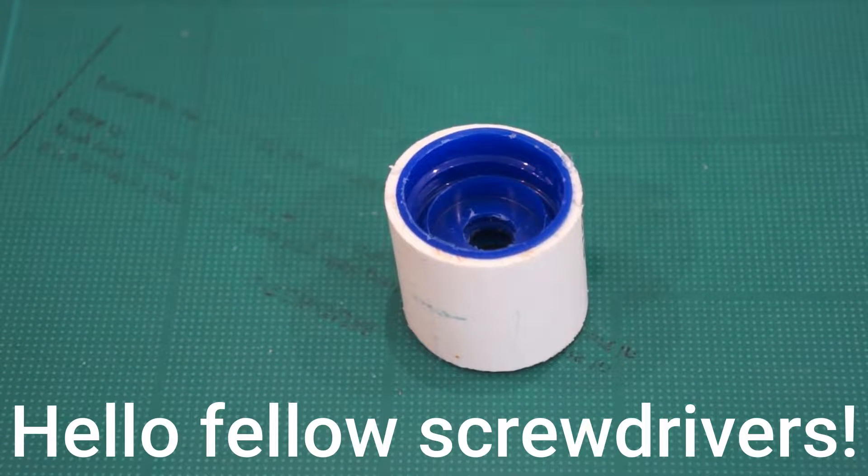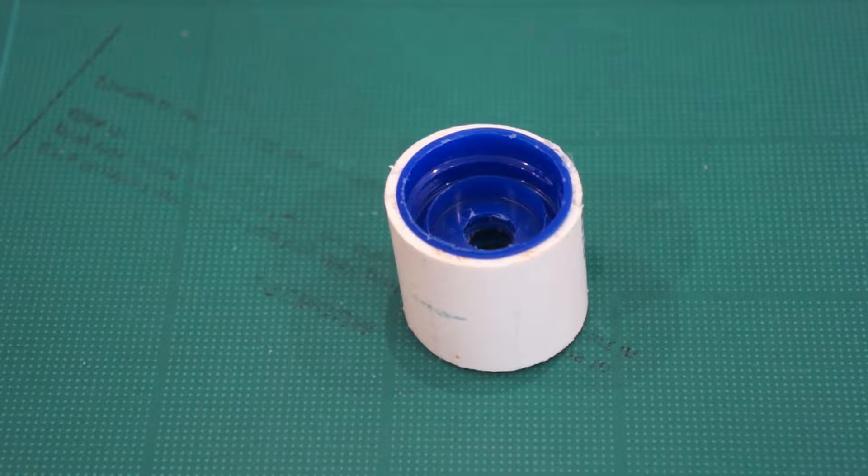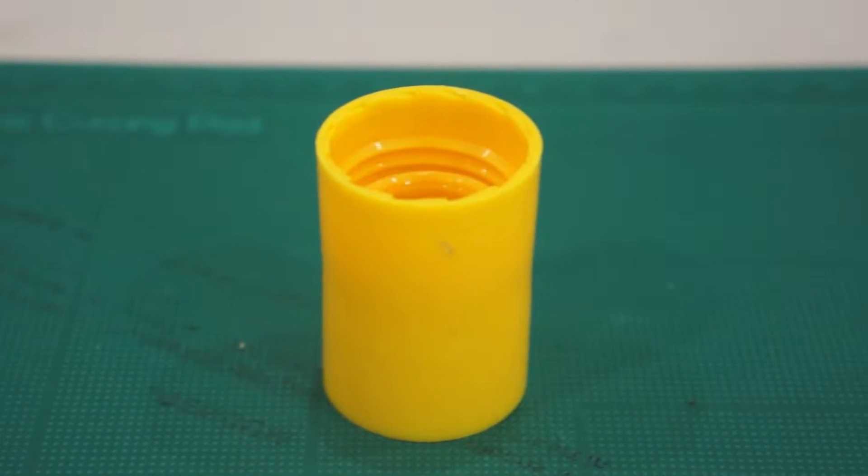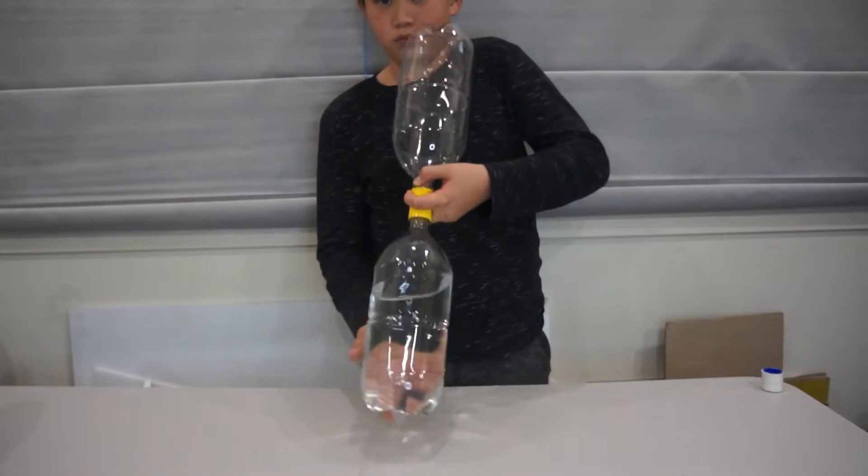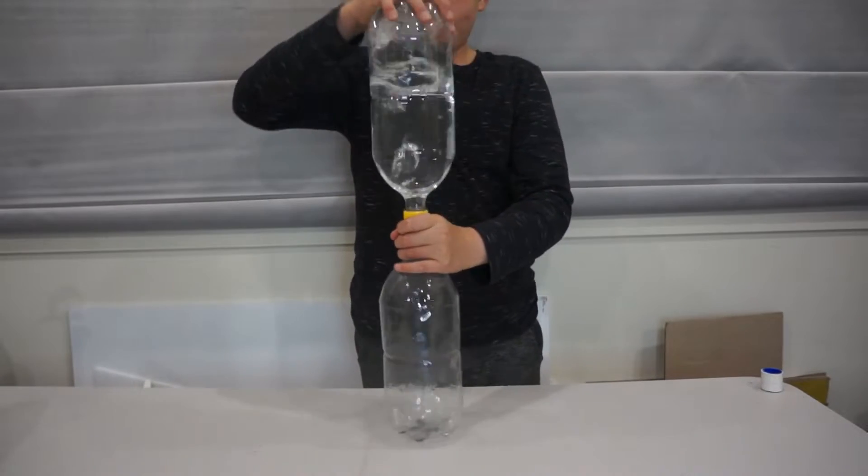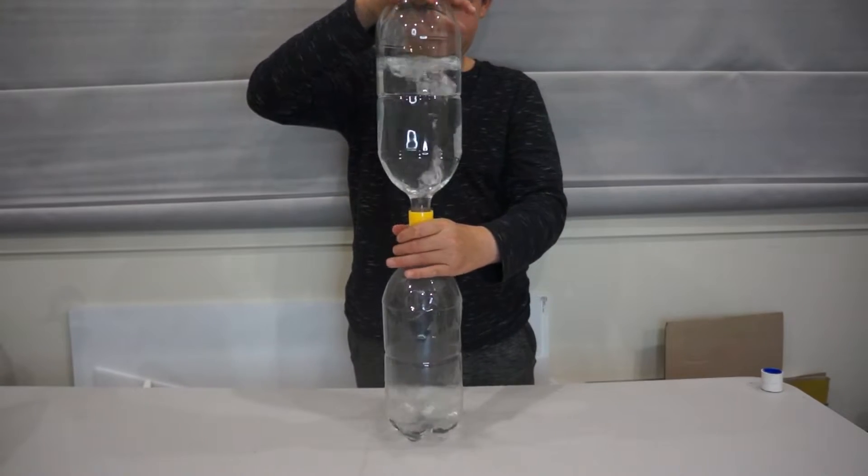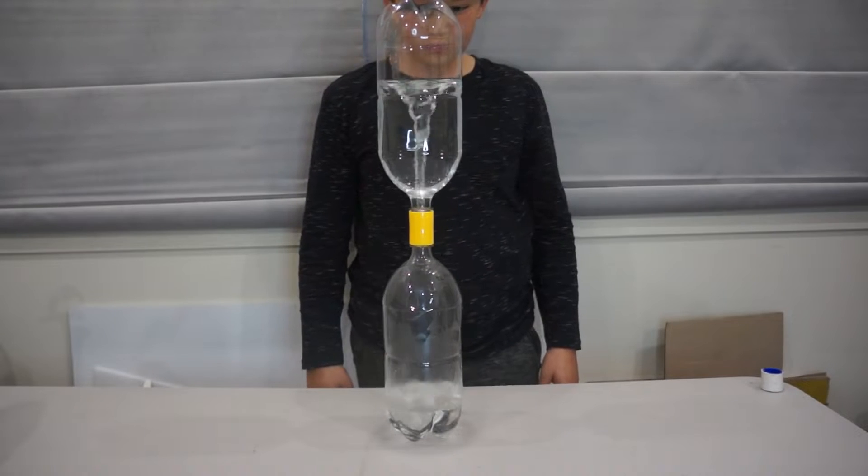Hello fellow screwdrivers, today I'll show you how to make a tornado tube. Tornado tubes are fun science toys that create a small water vortex in soft drink bottles that look like mini tornadoes.